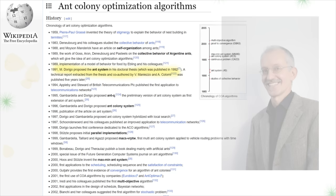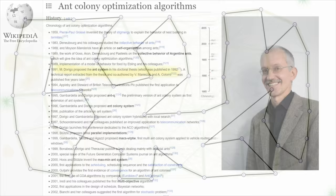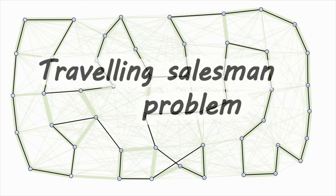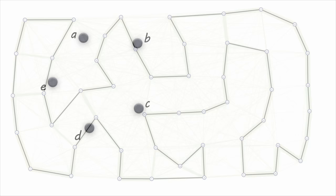The first version of the algorithm was suggested by Marco Dorigo in 1992. It was aimed at finding the optimal path in a graph. With the help of this algorithm, problems represented as a graph — aimed at finding the optimal path in it — are solved. It is usually about transport logistics or network technologies. First, let's analyze the traveling salesman problem.